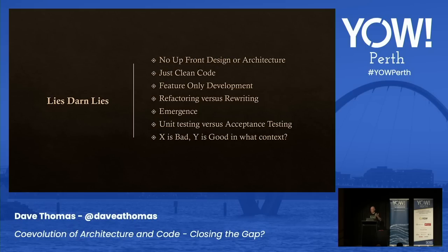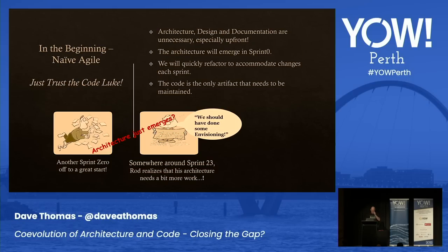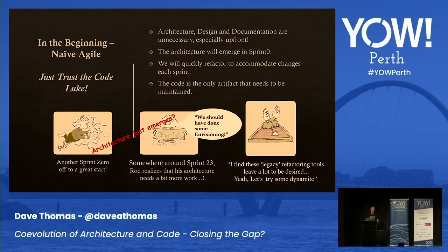There's this other rage thing: X is bad, Y is good — in what context? Event sourcing is an incredibly powerful technique but it's not the answer for everything. Neither is doing programming in Rust, Lisp, or your other favorite programming language — everything needs judgment. In the beginning, we all know about the naive agile story: trust the code, go quickly, we get a mess, and then we refactor it. It just doesn't work. Refactoring tools are terrible — they're toys. Most things people want to refactor, they want a button on their legacy system that says 'fix it'.